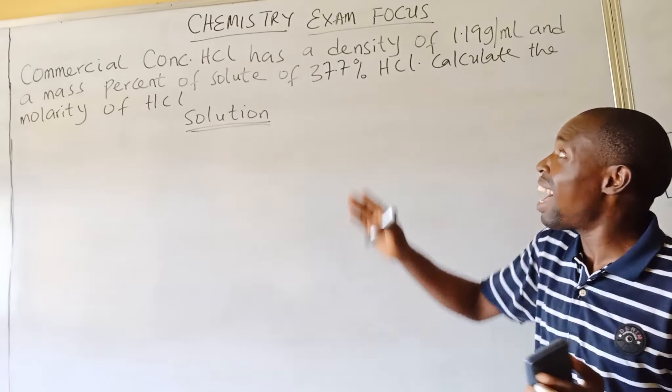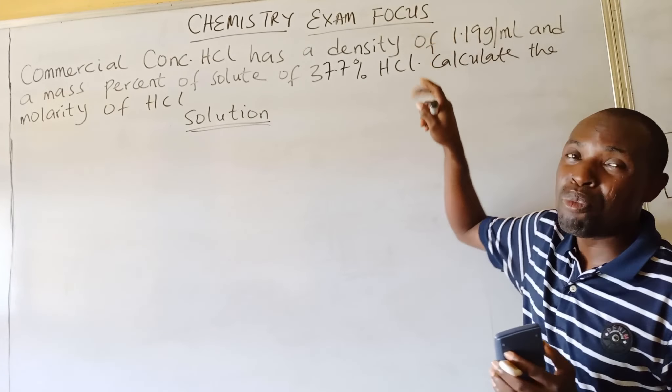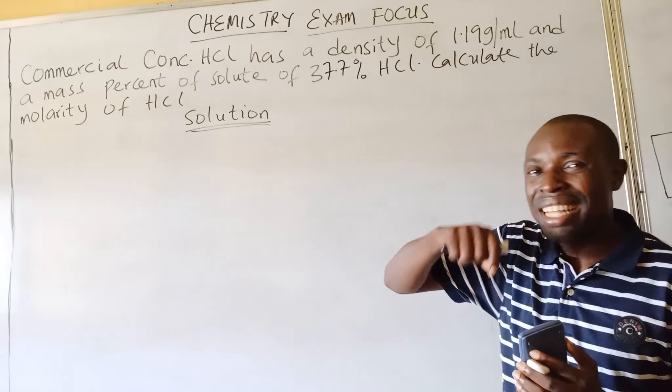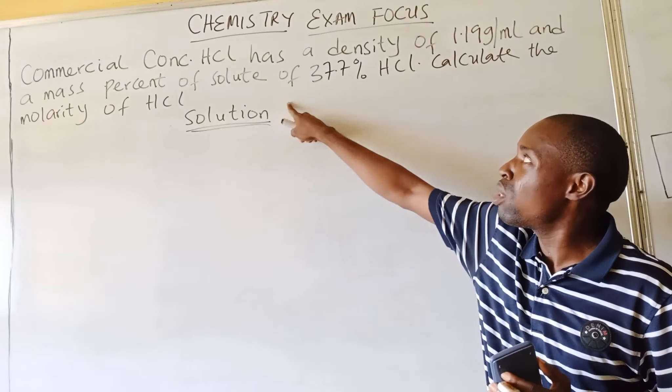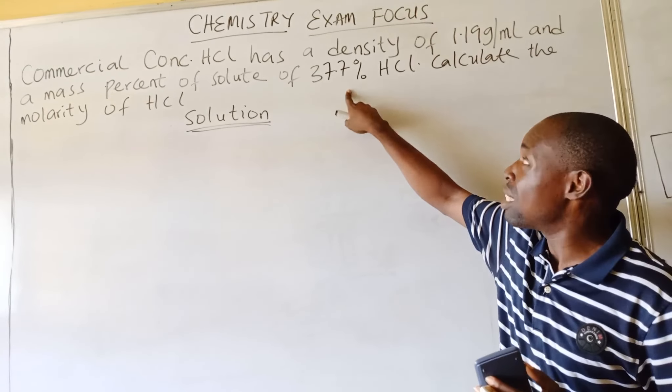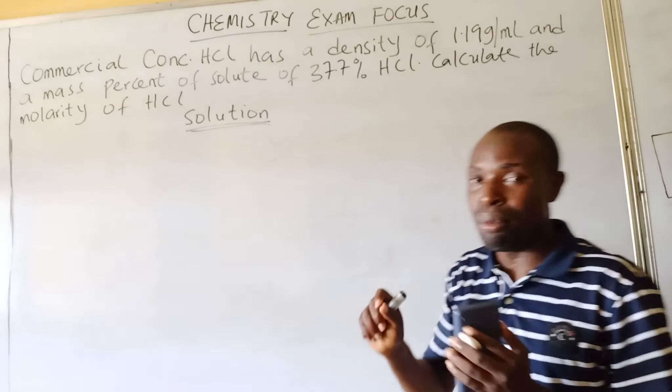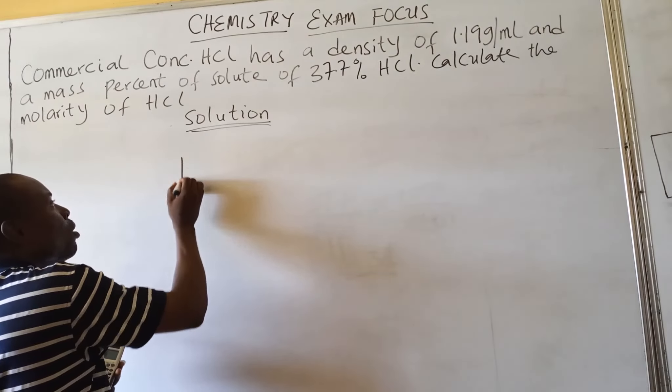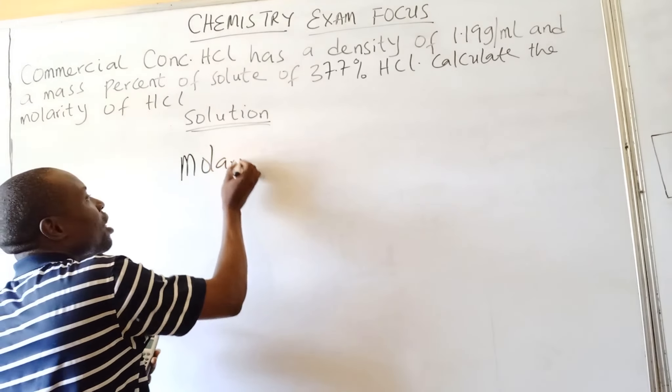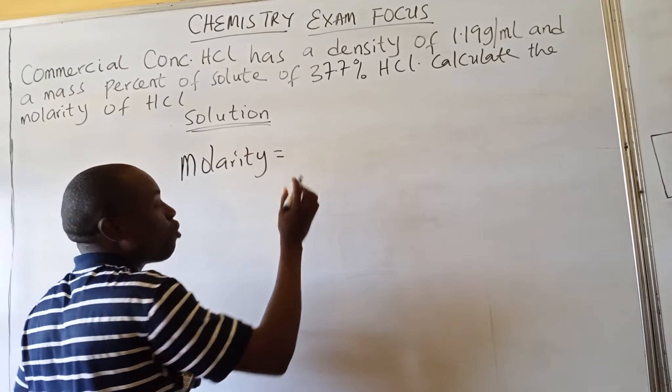HCl, which is hydrochloric acid, has a density of 1.19 grams per mL and a mass percent of solute of 37.7% HCl. Calculate the molarity of HCl. Now we should understand that molarity is equal to—from the shortcut I give you—mass over molar mass times 1000 over the volume of the solution.